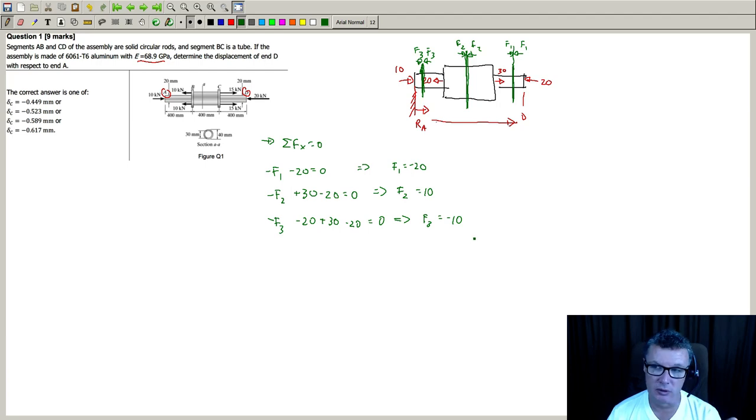So you've worked out your various internal forces in the particular sections of the assembly. The next thing is you're going to want to know the areas. So the area for this section here, which we call section 3, and this section here, section 1, they're going to have the same areas. So that will be area 1 equals area 3, and I'll use pi d squared divided by 4, and the diameter for that section is 20. You can change your millimeters into meters, square it, and you get 3.1416 times 10 to the minus 4 meters squared.